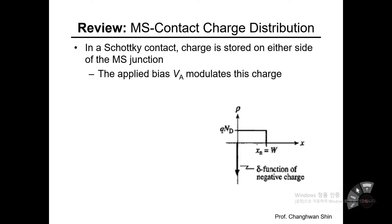As the very first step to understand the AC characteristic of the MS diode, let's start with the MS contact charge distribution — how the charged particles are distributed across the MS diode. In a Schottky diode, Schottky contact, the charge should be stored on either side of the MS junction.